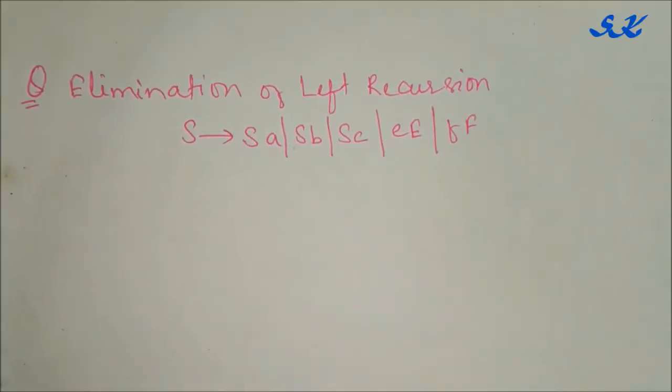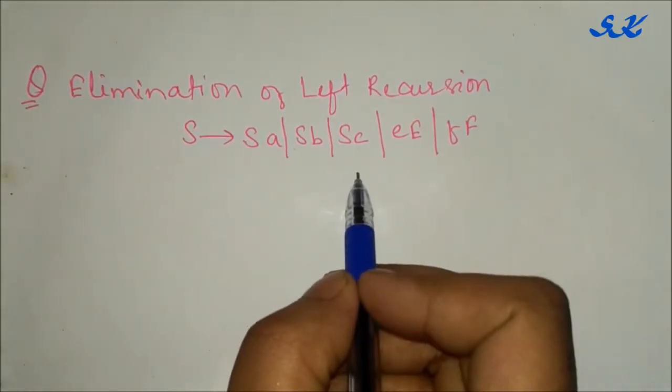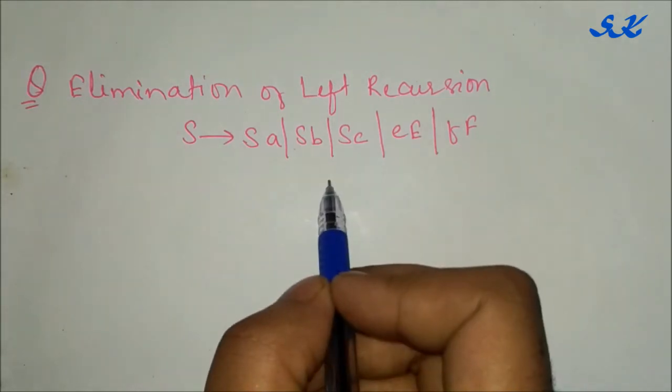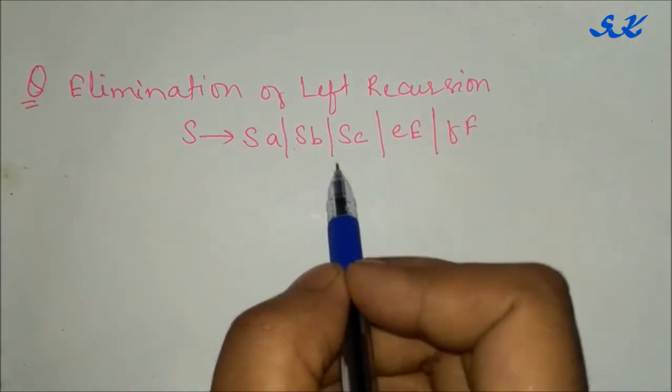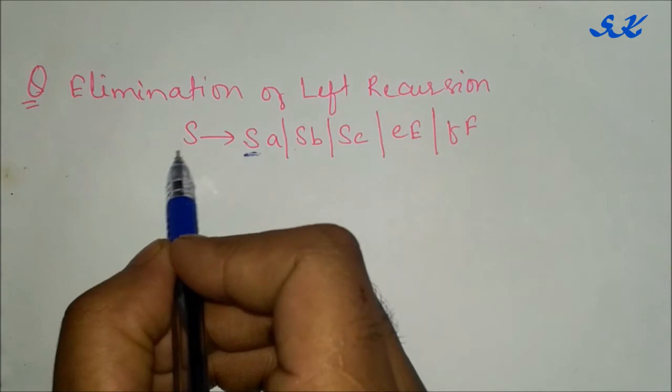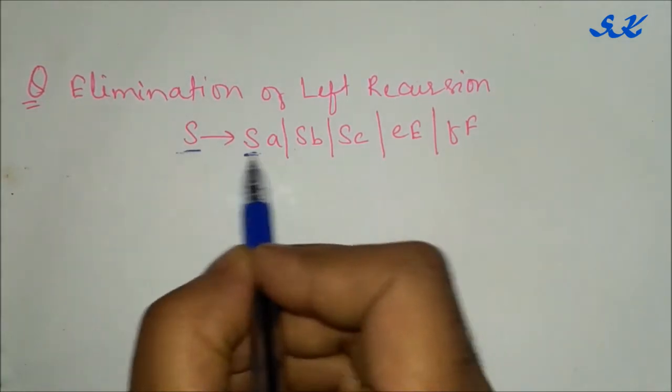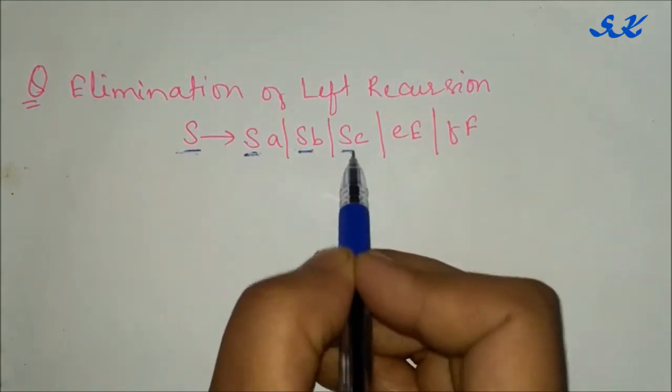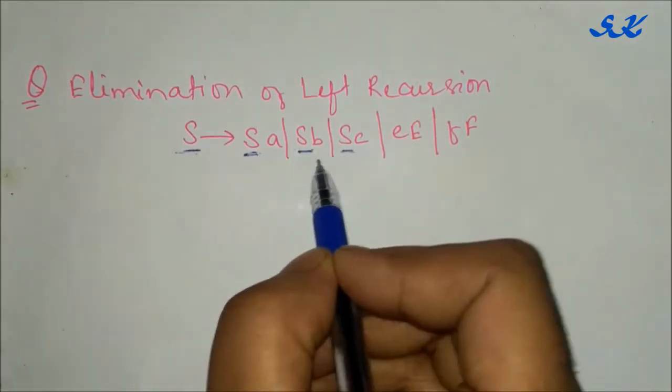We have to remove left recursion of the grammar. So how can we identify the grammar is in left recursion or not? The leftmost symbol matches to the left-hand side symbol. S goes to S, S goes to S. This is a non-terminal A, B, C are terminals.